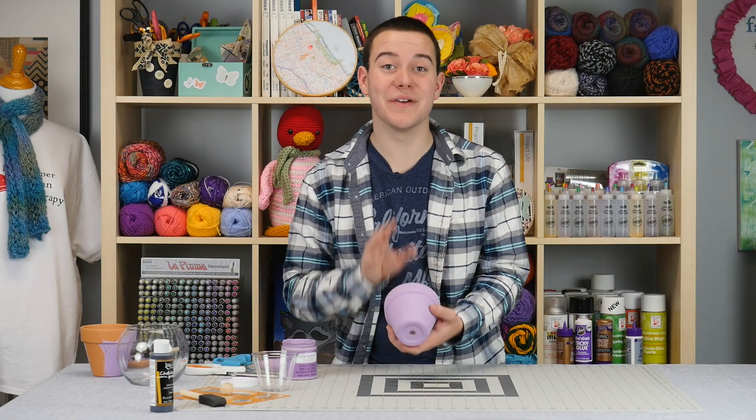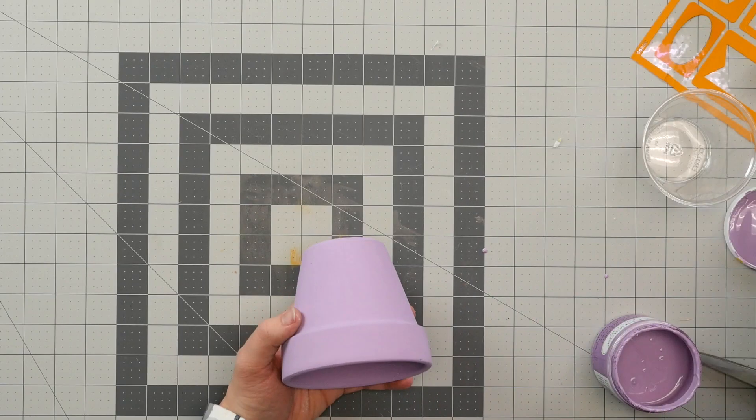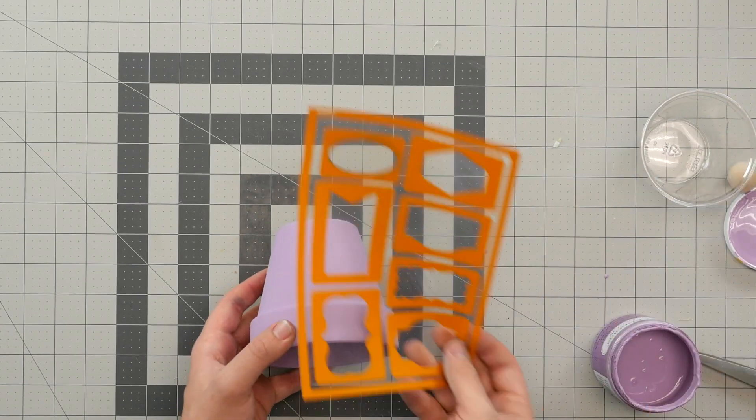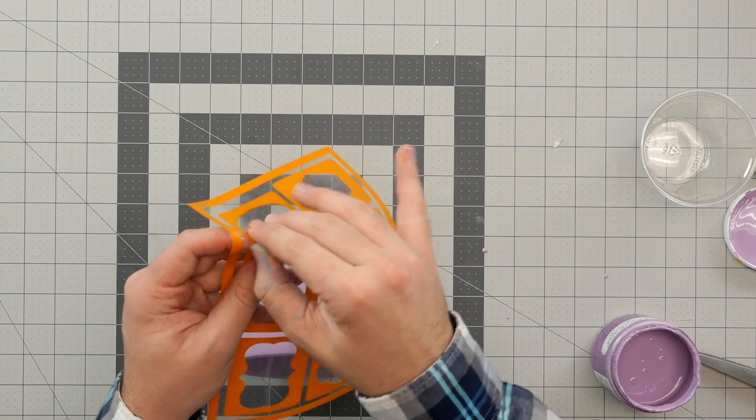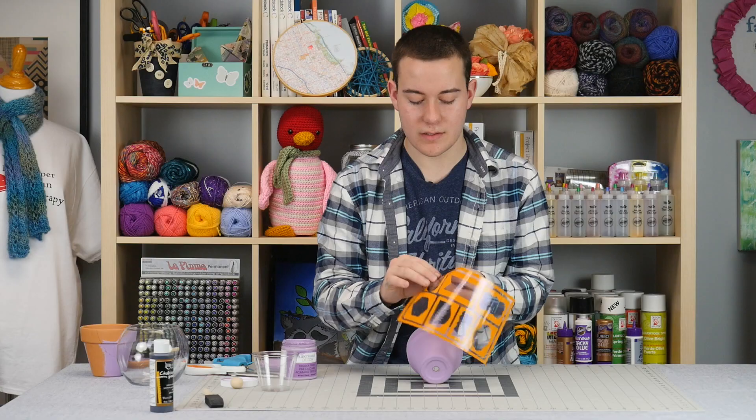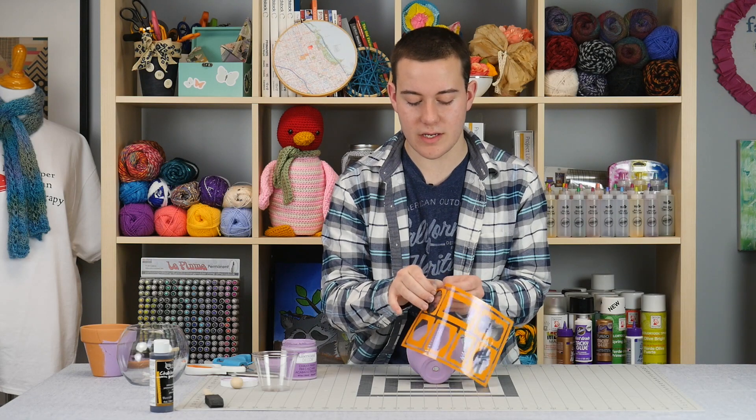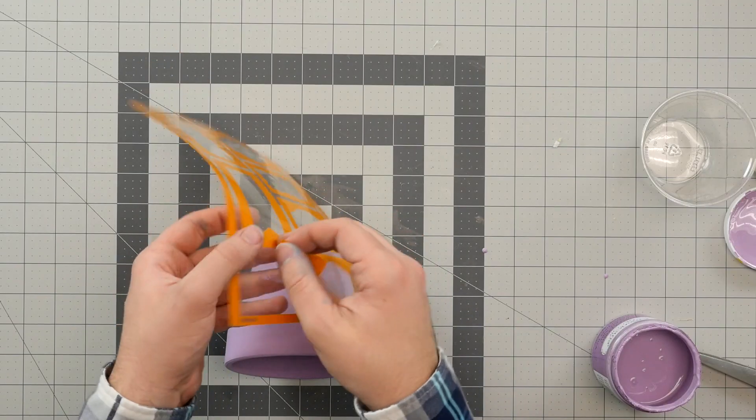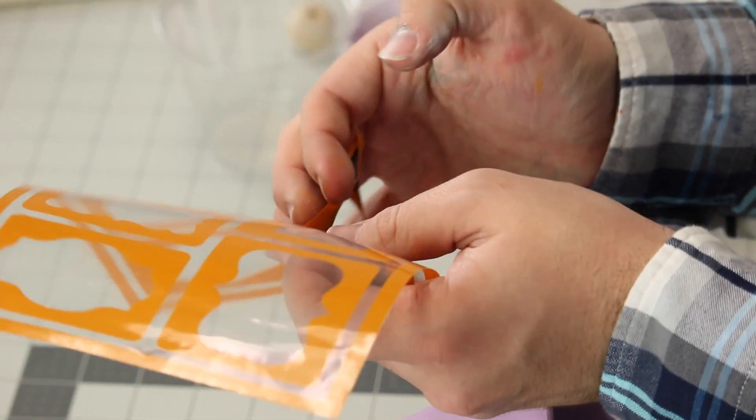Now what we're going to do since this is dry, we're going to take a label and apply it onto our terracotta pot. So I'm gonna grab this label right here and I've already used it once. I love these stencils because they're reusable.